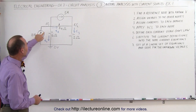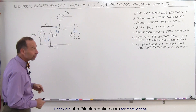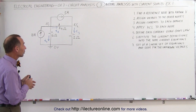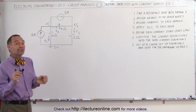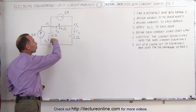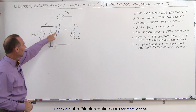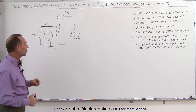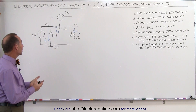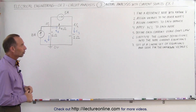We have a 10-amp source, a 5-amp source, and three resistors. We're trying to find the unknown voltages at the nodes and the unknown currents in the branches. The unknown currents are labeled I1, I2, and I3. Notice the small i's indicate the currents in the branches.